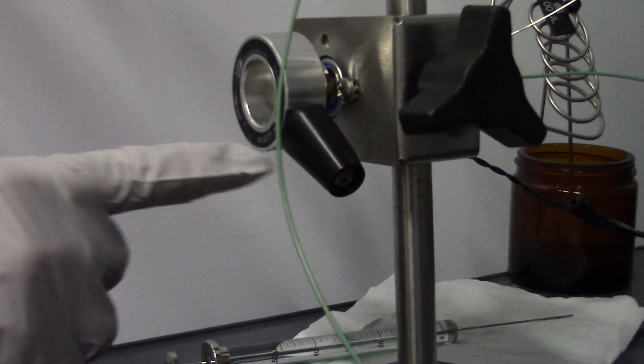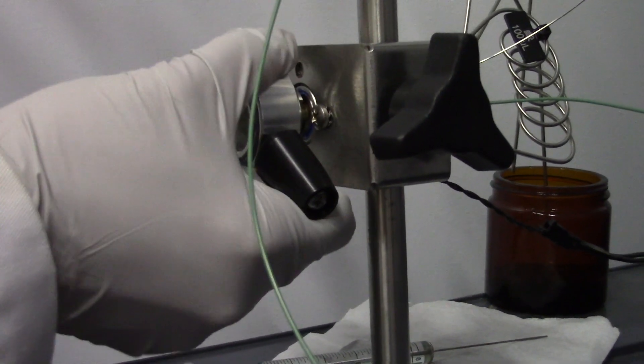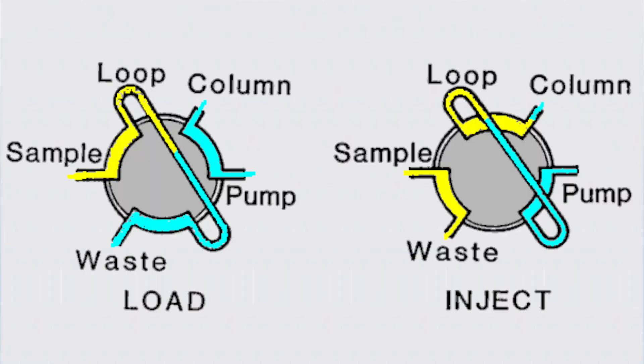With a rinsed syringe, you may now uptake your sample. Before injecting your sample into the injector piece, make sure the lever has the correct placement and load in order to receive the sample.